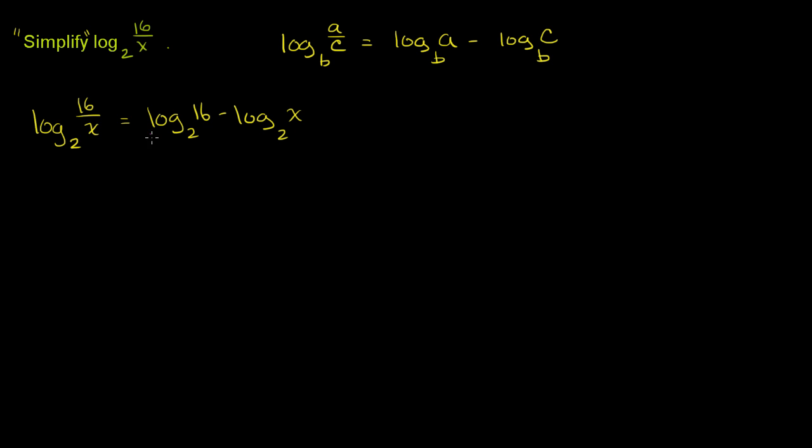And this is asking, this is the exponent that I have to raise 2 to to get to 16. Well, what do I have to raise 2 to get to 16? Well, 2 to the fourth power is equal to 16, so this first part evaluates to 4. If I raise 2 to the fourth power, I get 16. So this is another way of writing the number 4. You can think of it that way.